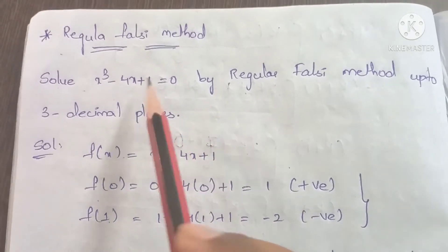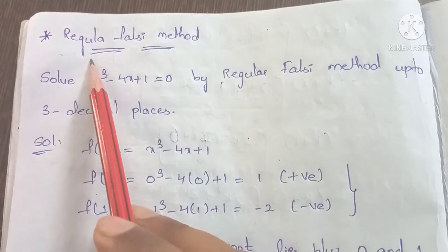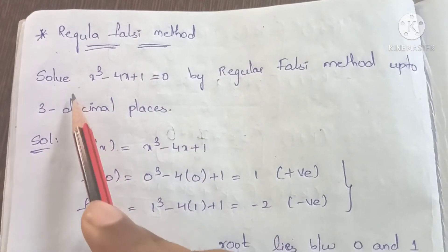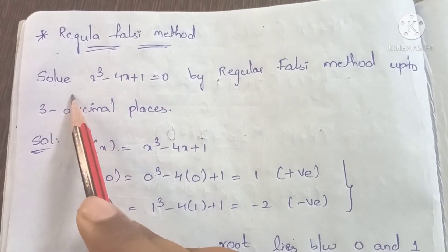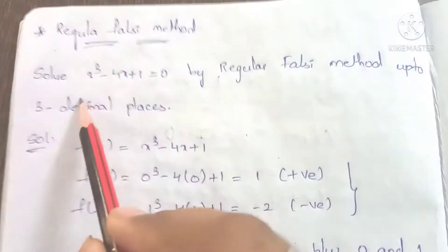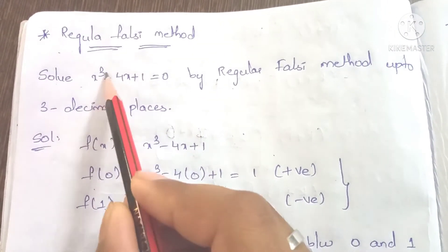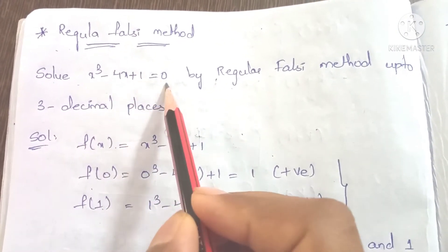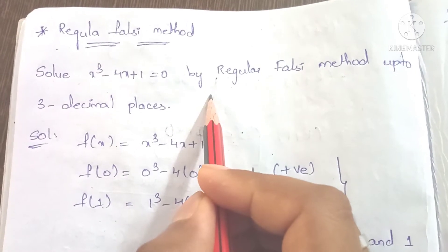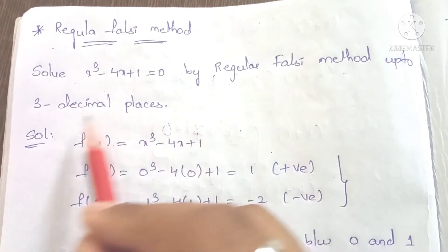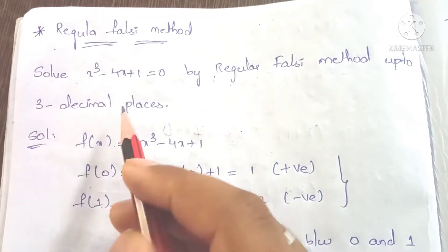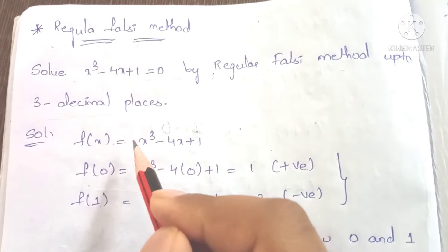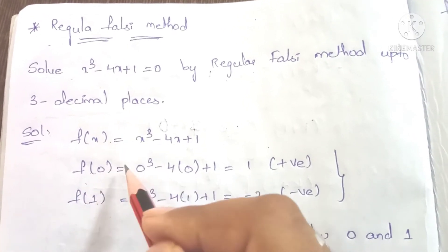Hi friends. Here my topic is the Regular Falsi method. The problem is to solve x³ - 4x + 1 = 0 by using the Regular Falsi method up to 3 decimal places.